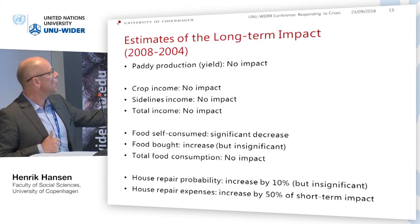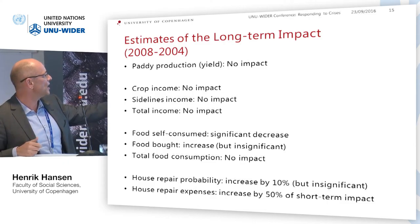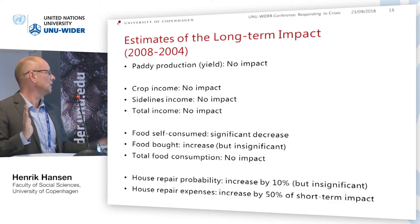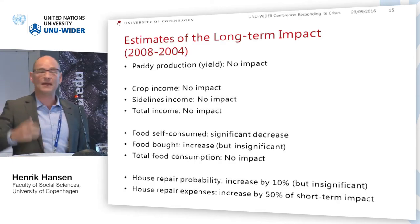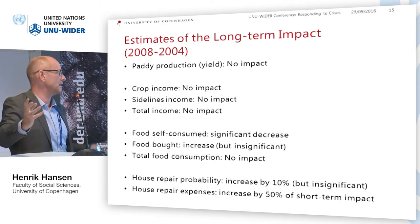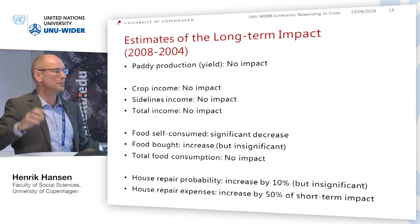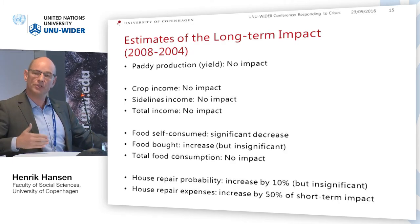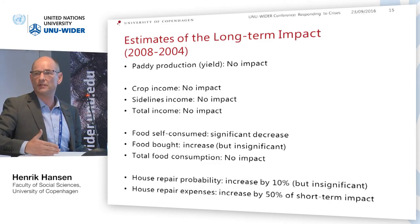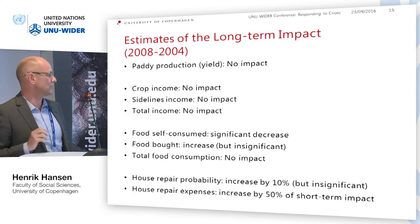Looking at longer-term impacts in 2008 — three years after the event — there is no impact on paddy production, meaning it recovered. Crop income, off-farm income, and total income show no change. Self-consumption decreased, reflecting capital depletion: livestock that died were not replaced. Food purchased showed a slight increase, but not significant. Total food consumption showed no impact — they eat as much. However, house repair probability still shows an increase, suggesting some households, likely the poorer ones, are postponing repairs, possibly due to high short-term pressure on housing resources.